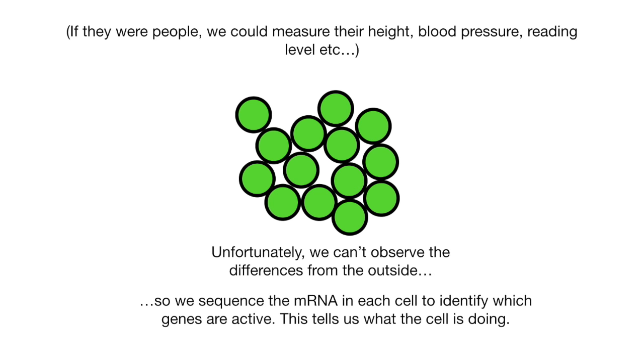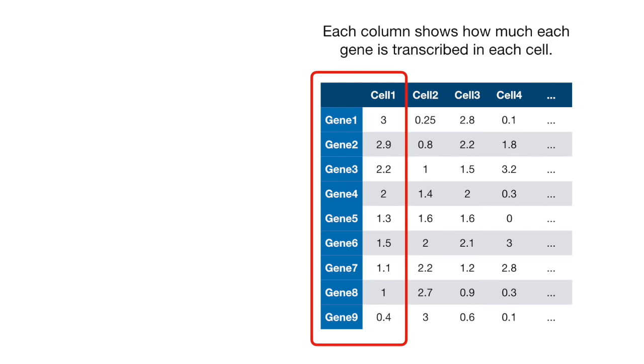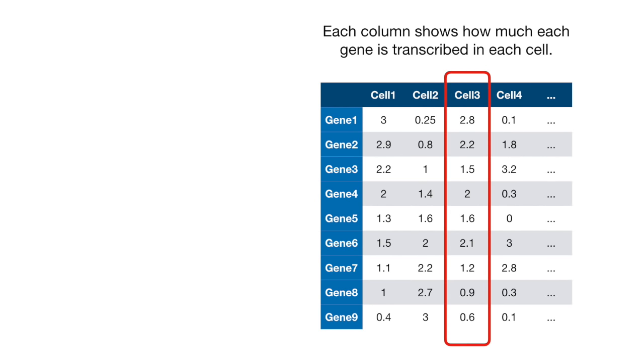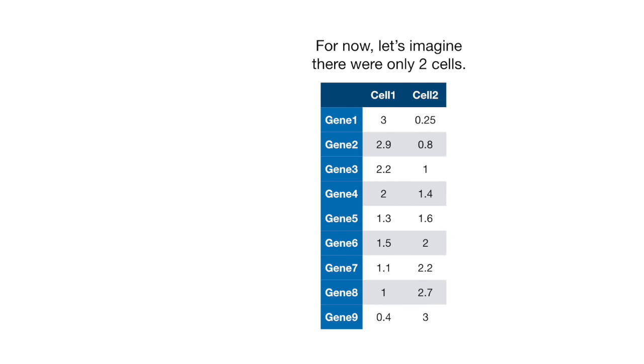Psst! If they were people, we could measure their weight, blood pressure, reading level, etc. Okay, here's the data. Each column shows how much each gene is transcribed in each cell. For now, let's imagine there are only two cells.